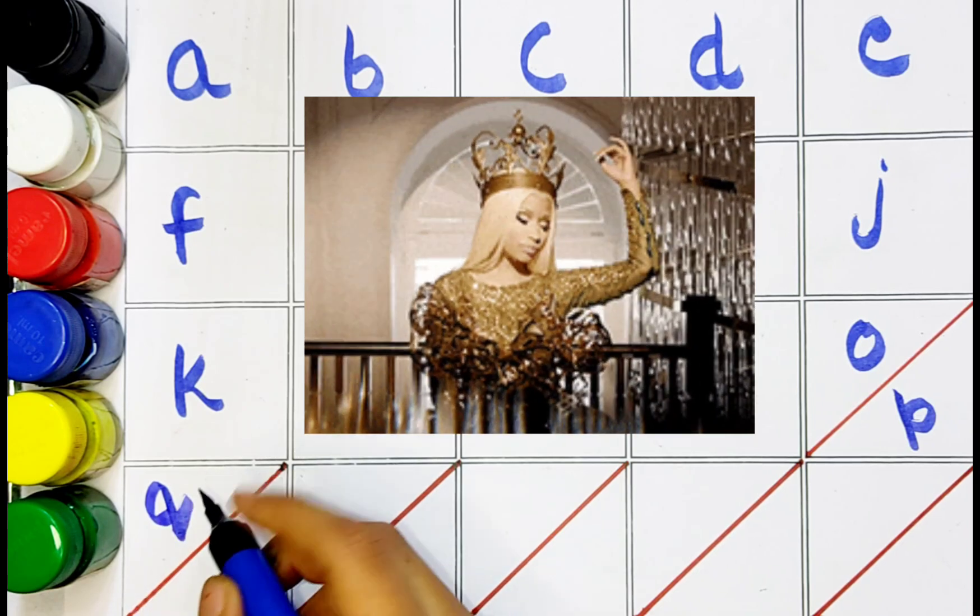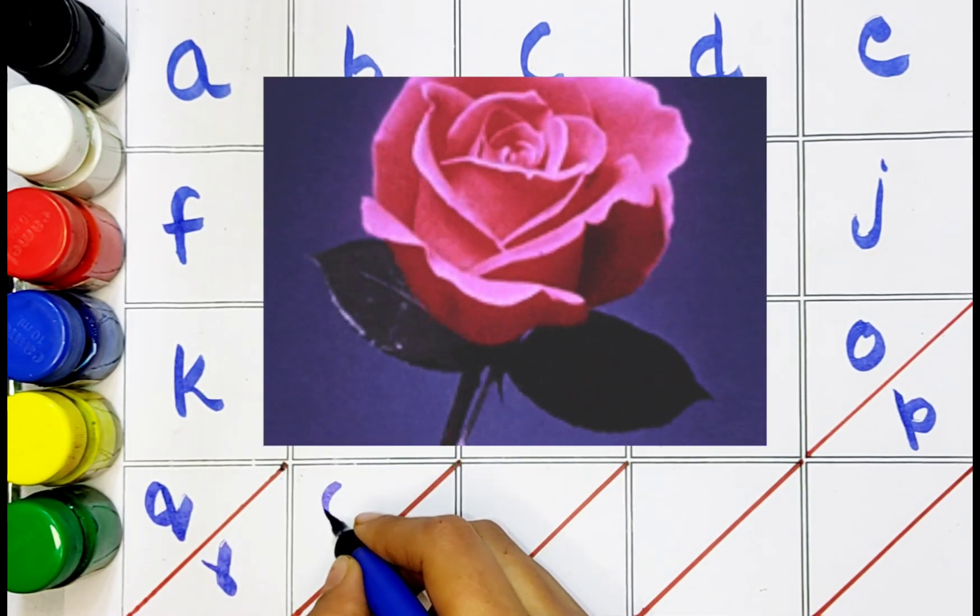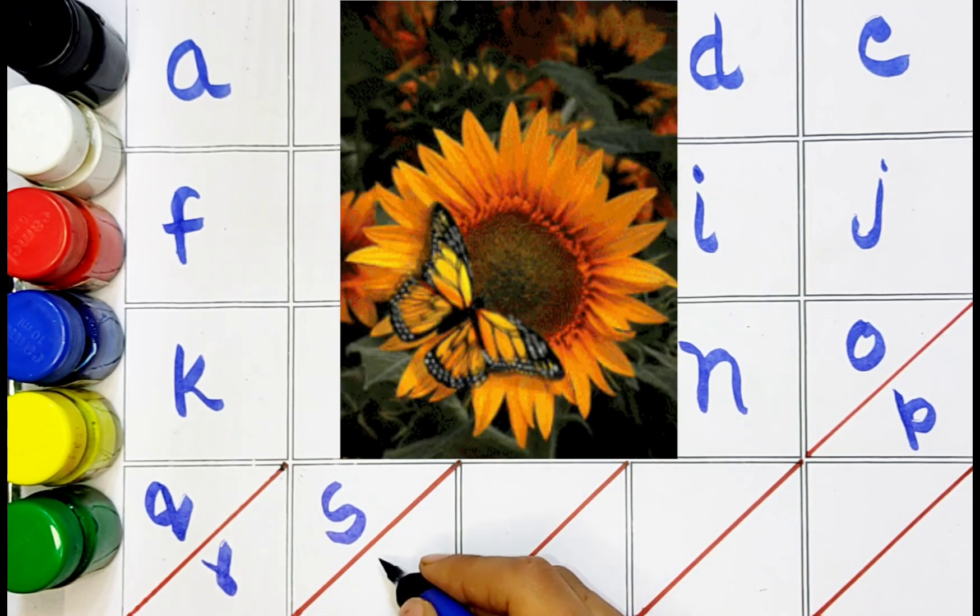Q. Q for queen. R. R for rose. S. S for sunflower.